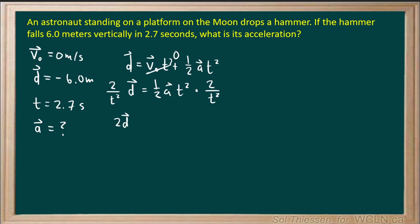So on the left we'll have 2 times displacement over time squared equals acceleration. So now let's plug in some values. We know the displacement to be negative 6.0 meters, we know the time to be 2.7 seconds. Square that.